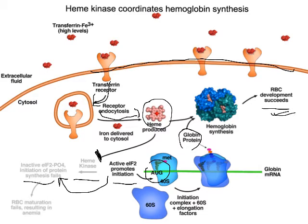In this case, the heme is inhibiting the heme kinase and preventing it from inactivating the eukaryotic initiation factor 2. Everything's going along fine.